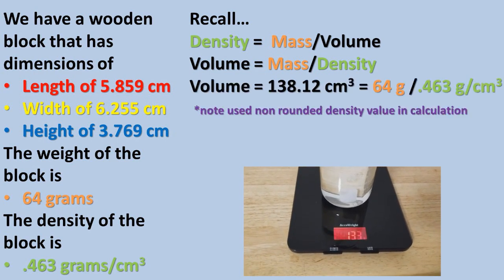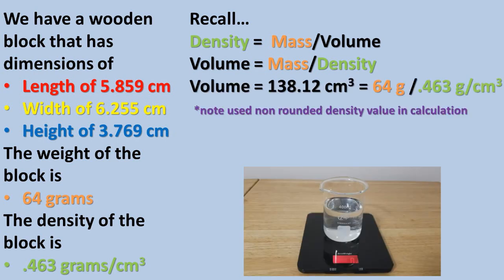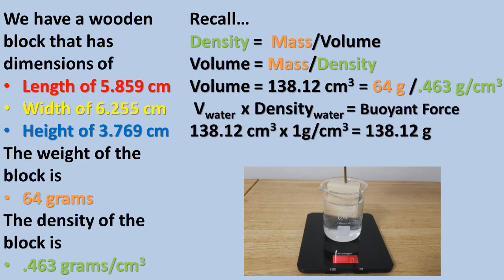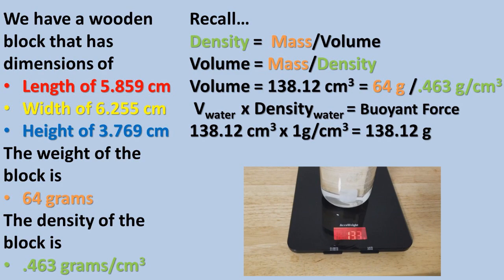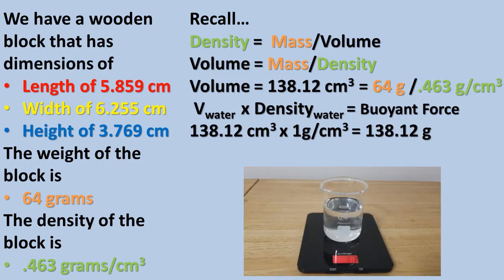Plugging in our numbers, we get a volume of 138.12 centimeters cubed. Now we can once again take the total volume of water that is displaced by the block and multiply it times the density of water. We get a buoyant force of 138.12 grams force.